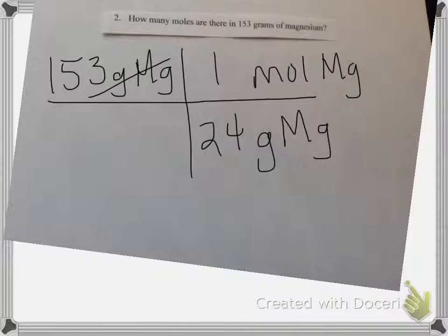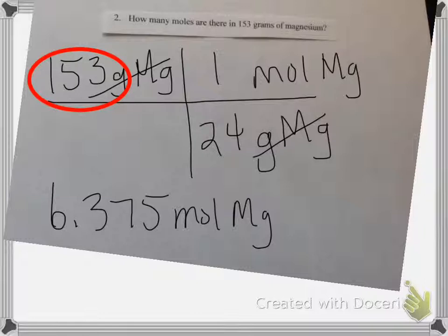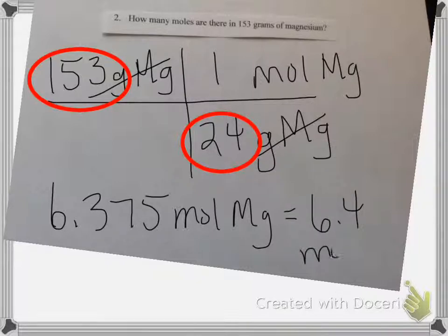You should have decided to put 1 next to mole and 24 next to grams of magnesium. Mole will always be 1 for these problems, and the grams will be the molar mass from the periodic table. Cancel out the units in the top and bottom because they divide each other and become 1, then multiply the top numbers and divide by the bottom. When I do the calculation, I get 6.375 moles of magnesium, which rounds to 6.4 moles of Mg — 2 significant figures.